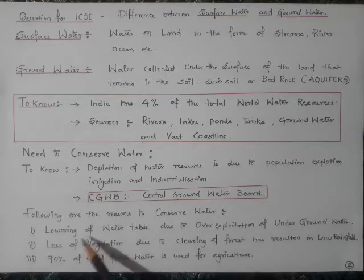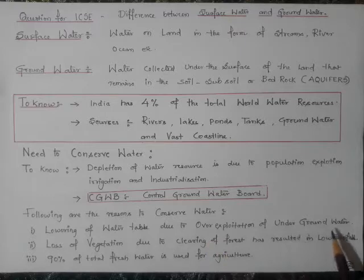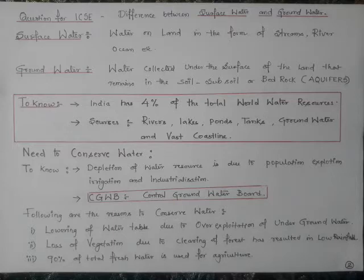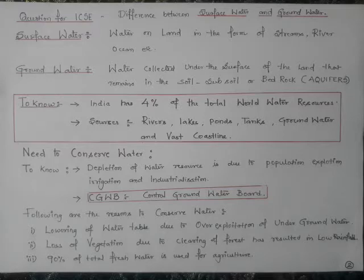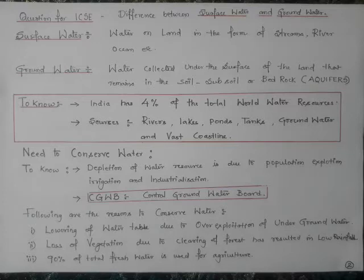The first reason is the lowering of the water table due to over-exploitation of underground water. Because of rapid urbanization, demand for water increases. Surface water from lakes and rivers is getting contaminated, so people are targeting underground water. This underground water is continuously being tapped, causing the aquifers and underground water table to go dry.